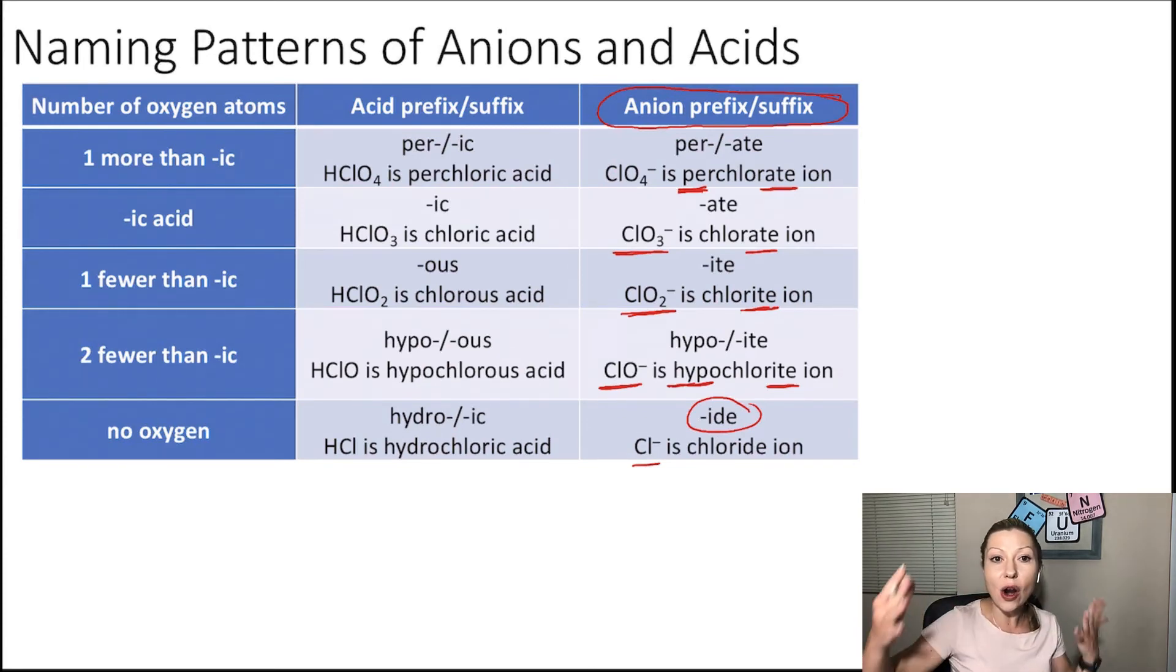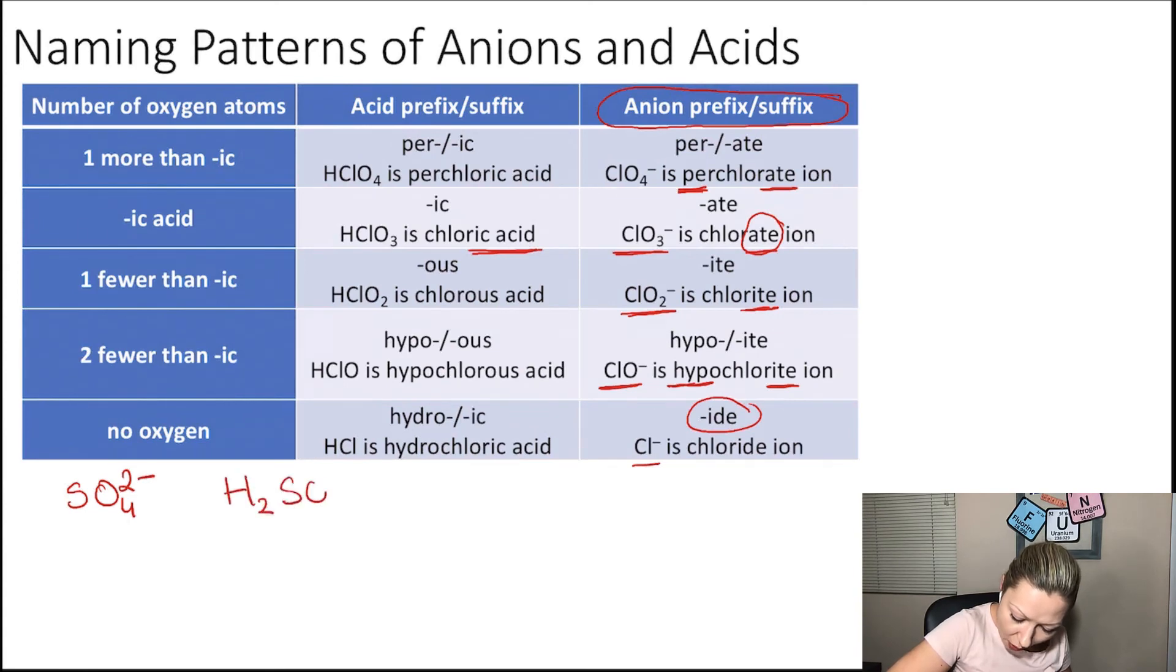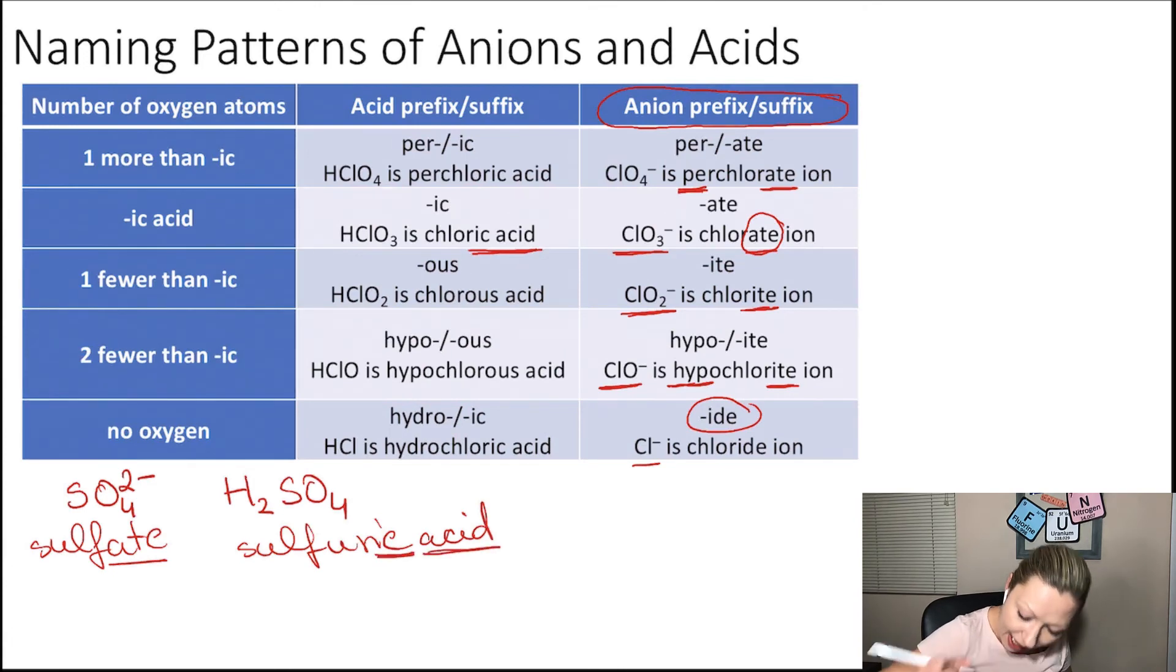Acids are named in a similar pattern. If we go with our -ate ion that has the -ate ending, then I'm going to have an acid that ends with -ic acid. Let me give you another example. So I had the sulfate ion, SO4 2- ion, and the acid is H2SO4. So this was the sulfate ion, and H2SO4 is going to be sulfuric acid. So the -ate ion has an -ic acid.